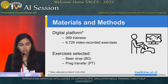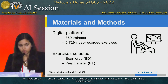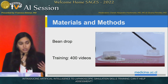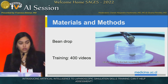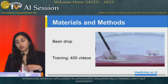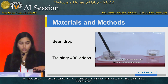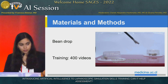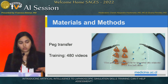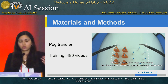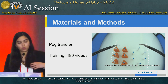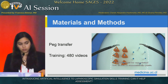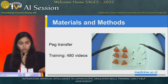Of those videos, we selected two exercises. The first was the bean drop exercise and the second was the PEG transfer. The bean drop exercise consists of moving five beans from one recipient to the other in less than 24 seconds without dropping any bean. To train the algorithm, we used 400 videos. The PEG transfer consists of moving six rubber objects from left to right while switching mid-air from the left hand to the right, then doing it backwards without dropping the object in less than 55 seconds. To develop the algorithm for this exercise, we used 480 videos.